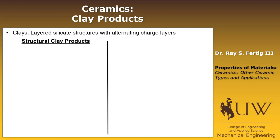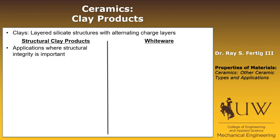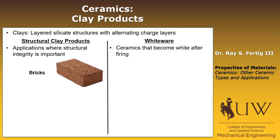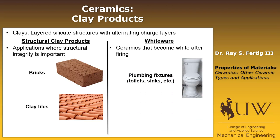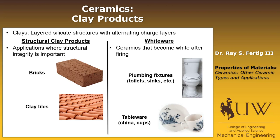One would be structural clay products — applications where the structural integrity of the product is important. The other class is called whiteware, which are ceramics that become white after firing. Examples of structural clay products would be things like bricks and clay tiles, like the kind you might see on a roof. On the whiteware side, plumbing fixtures would be an example. Of course, tableware like your china or coffee cups would also be classic whiteware made from clays.